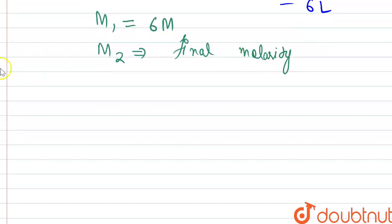Now we will use the expression over here, that is M1V1 is equal to M2V2. So initial molarity, six molar, multiplied by initial volume, that is two liters. Six molar multiplied by two liters.